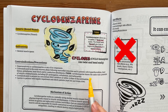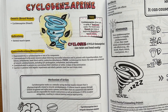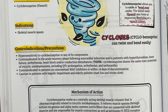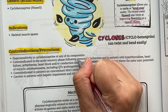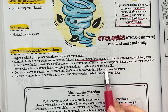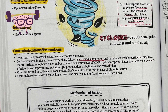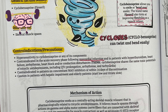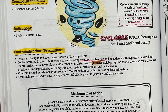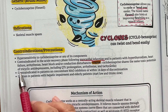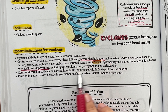Some contraindications and precautions to keep in mind when using this medication: it is contraindicated in the acute recovery phase following a myocardial infarction or heart attack, and in patients with hyperthyroidism, heart failure, arrhythmias, heart block, and conduction disturbances. Memory tip: cyclobenzaprine is contraindicated in a lot of cardiac conditions because it shares the same toxic potentials of tricyclic antidepressants, including QTc prolongation, arrhythmias, and tachycardia.